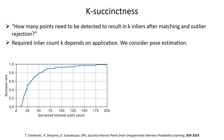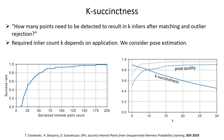The required inlier count k depends on the application. We consider relative pose estimation. We can look at relative pose quality as we change the required number of inliers k on the x-axis. The y-axis shows a larger-the-better metric for rotation and translation accuracy and succinctness. The larger k, the better the pose estimate will be. At the same time, the larger k, the worse succinctness will be, as more points will need to be extracted.